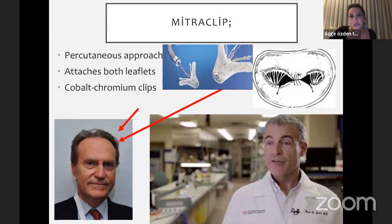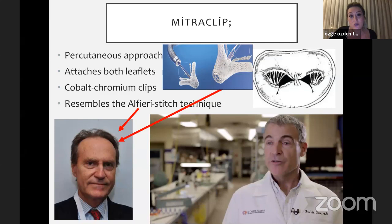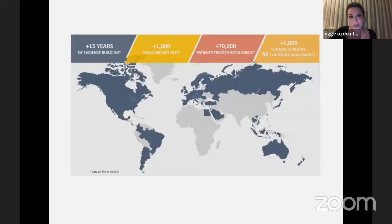As we all know, MitraClip is a percutaneous approach that attaches both leaflets of the mitral valve, made by cobalt chromium clips. It resembles the surgical Alfieri stitch technique, which was first described by Dr. Alfieri. It's been more than 15 years since the first MitraClip experience, with more than 1,000 published articles, more than 70,000 patients treated worldwide, in more than 1,000 centers across nearly 50 countries.